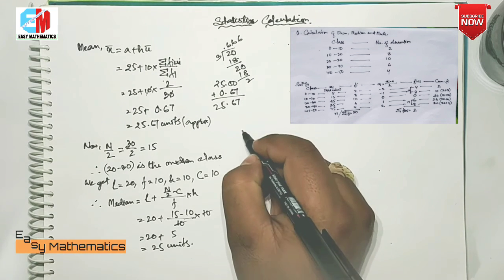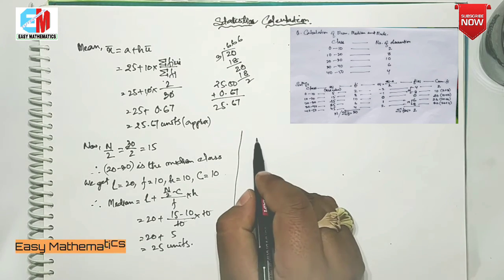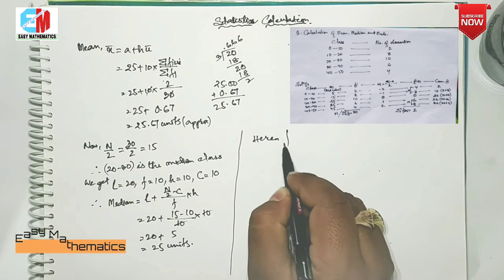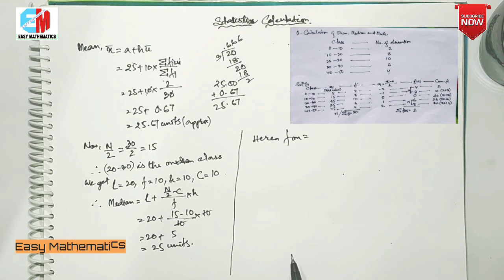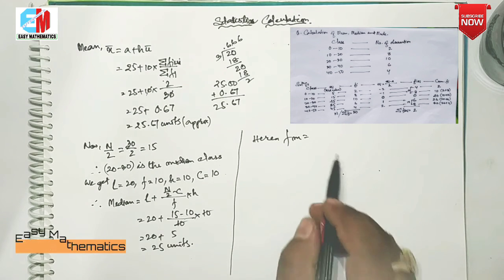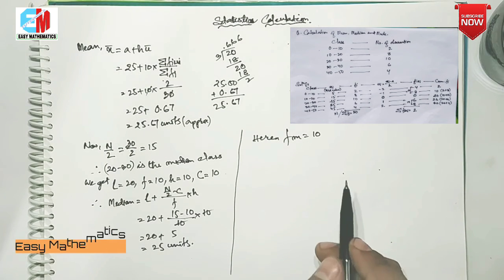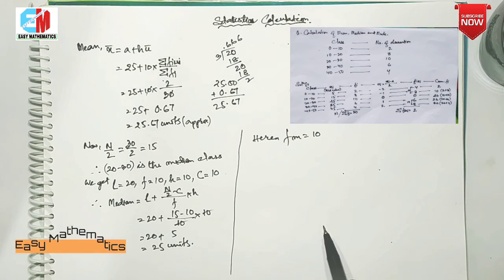If you want to see the mode, you can see here FM — maximum frequency. If you want to see the maximum frequency, the maximum frequency is the highest. You have to see the modal class.